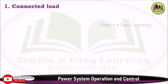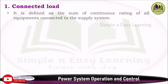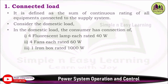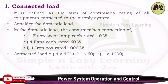First: connected load. It is defined as the sum of continuous ratings of all equipment connected to the supply system. For example, consider a domestic load where a consumer has four fluorescent lamps each rated 40W, four fans each rated 60W, and one iron box rated 1000W. The connected load is (4×40) + (4×60) + (1×1000) = 1400 watts.